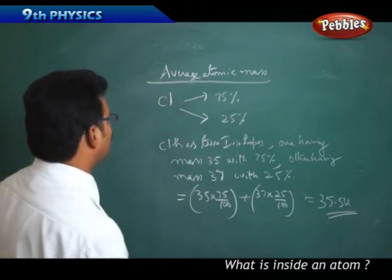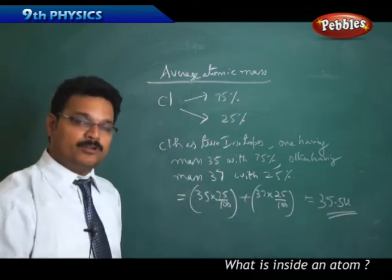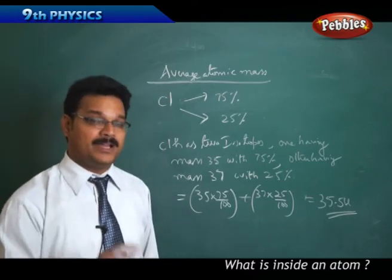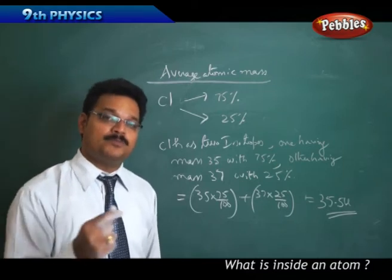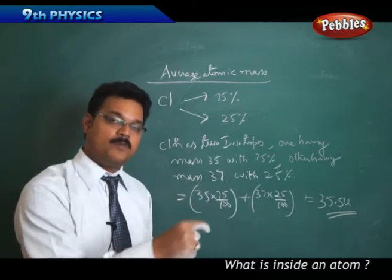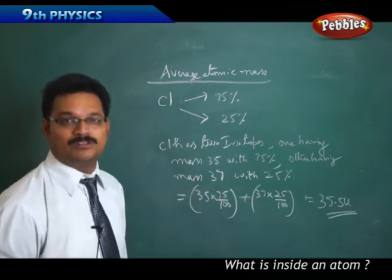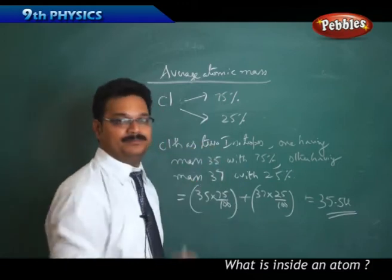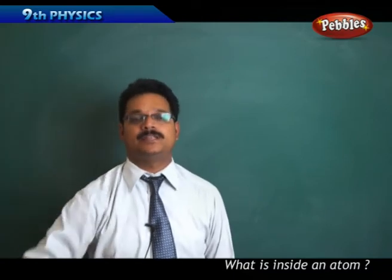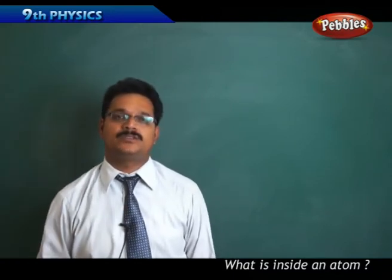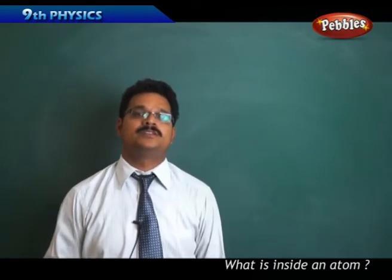So the chlorine average atomic mass is 35.5 U. If you want to find atomic mass of carbon, then carbon has two isotopes: C-12, C-13. You'll see how much percentage of C-12, how much percentage of C-13 existing in nature and do the calculation like this. So far we understand about what is atom, what is inside the atom, electrons, protons, neutrons, different atomic models, and isotopes. Let us do some numerical based on these concepts.